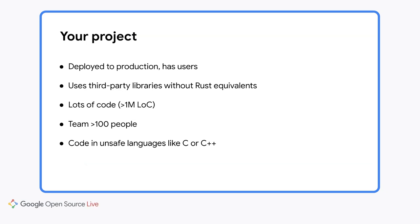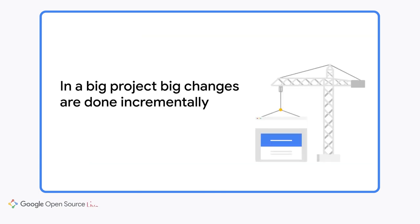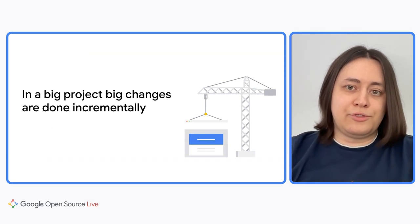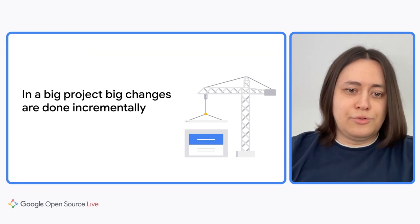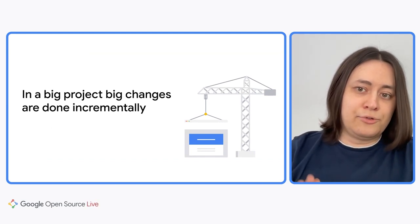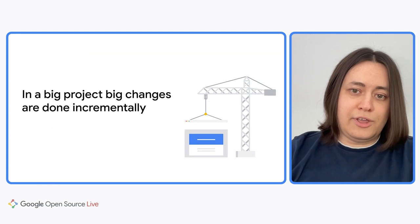Your current project is probably deployed in production. It depends on libraries that are not available in Rust. The project has a lot of code — possibly millions of lines. Your team is pretty large, maybe 50 or even 100 people. And the code is written in unsafe languages like C or C++. Is it still a good idea to rewrite it in Rust? In a big project, big changes are done incrementally, one step at a time. If your project is essential for your company's business, you cannot just ask everyone to freeze feature development while you convert a few million lines of code to Rust. You generally should not do a big-bang rewrite in Rust unless you have already decided to start from scratch for other reasons. Most likely, a rewrite is not economically and socially viable.